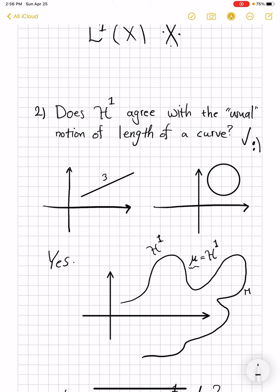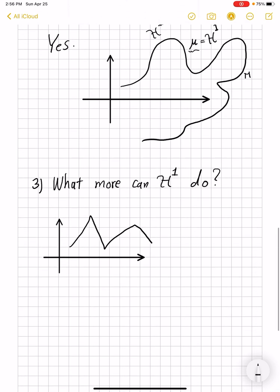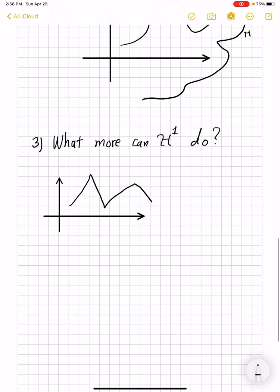So that H¹ is not a random object we have created. And question number three is, now that we have this H¹ and it agrees with the other notions in the smooth cases, does it do actually more? And the answer is definitely yes.